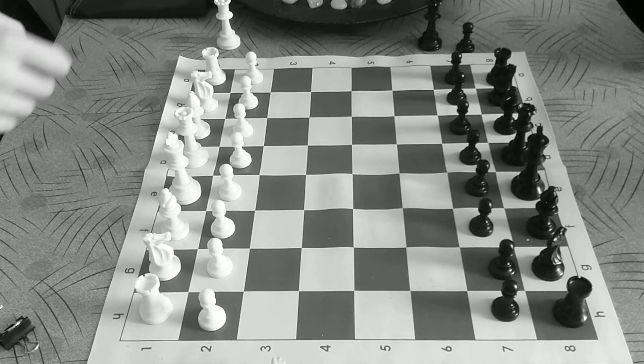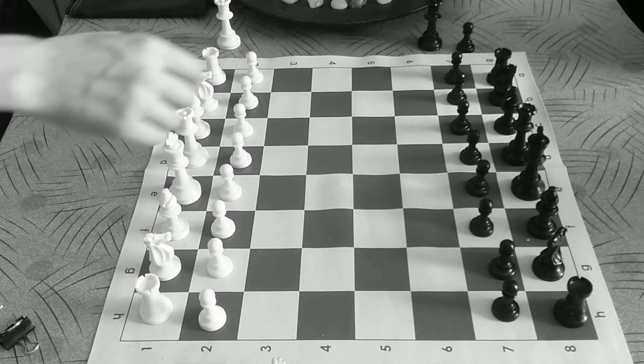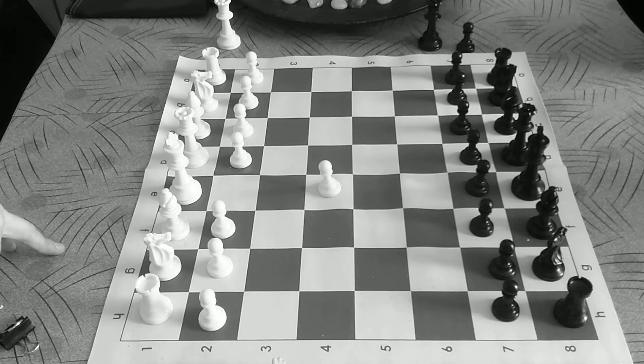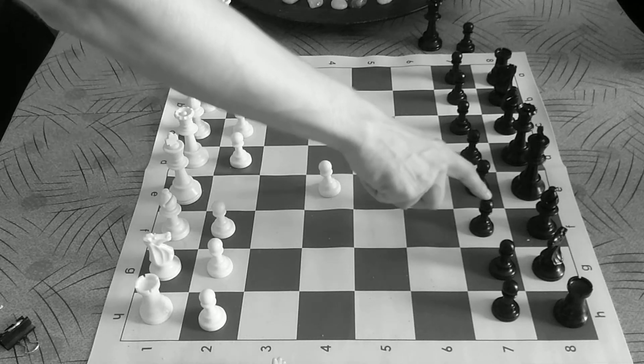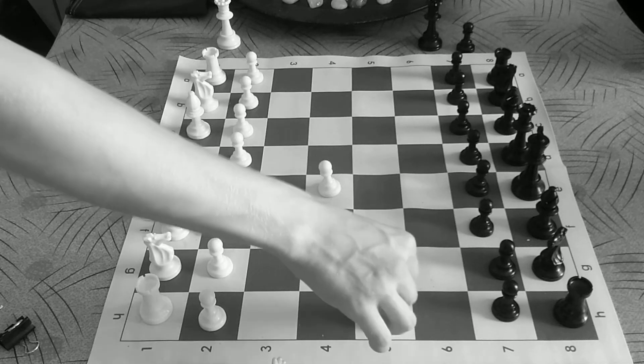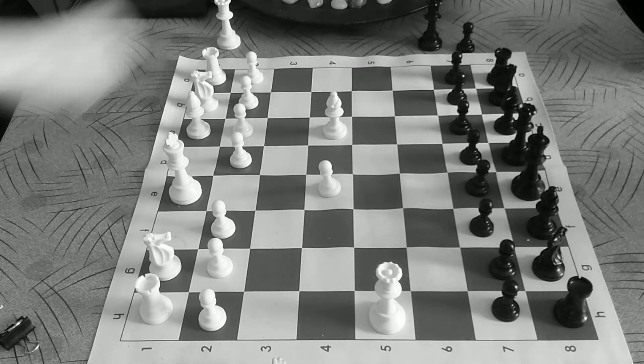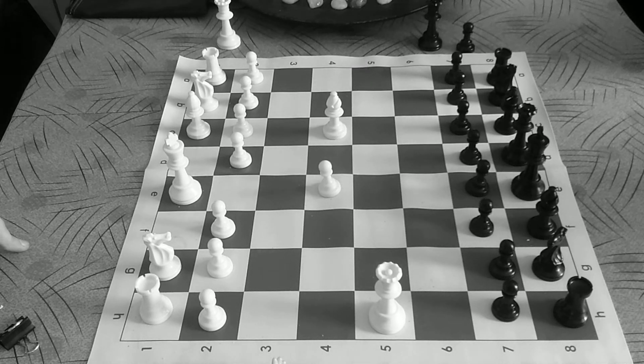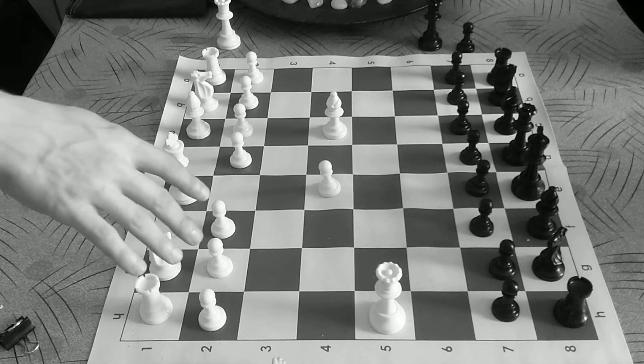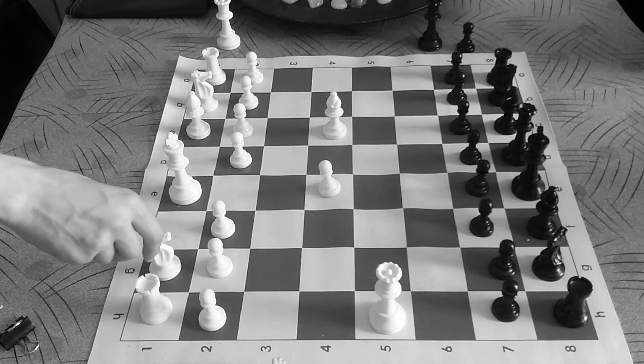So for posterity and to avoid having to google this at a later date, the 4 move checkmate starts with the e4 opening and it revolves around attacking this f7 pawn with the queen on h5 and bishop on c4, and a more advanced variation called the fried liver.